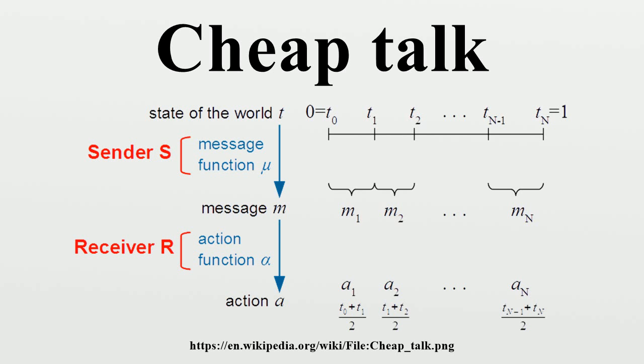n = 2: t_0 = 0, t_1 = 2/5 = 0.4, t_2 = 1, a_1 = 1/5 = 0.2, a_2 = 7/10 = 0.7.